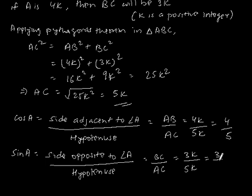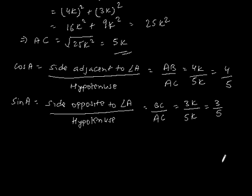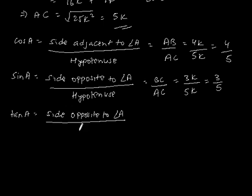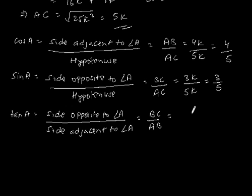Now let's find tan A. Tan A = side opposite to angle A divided by side adjacent to angle A = BC / AB = 3k / 4k = 3/4.